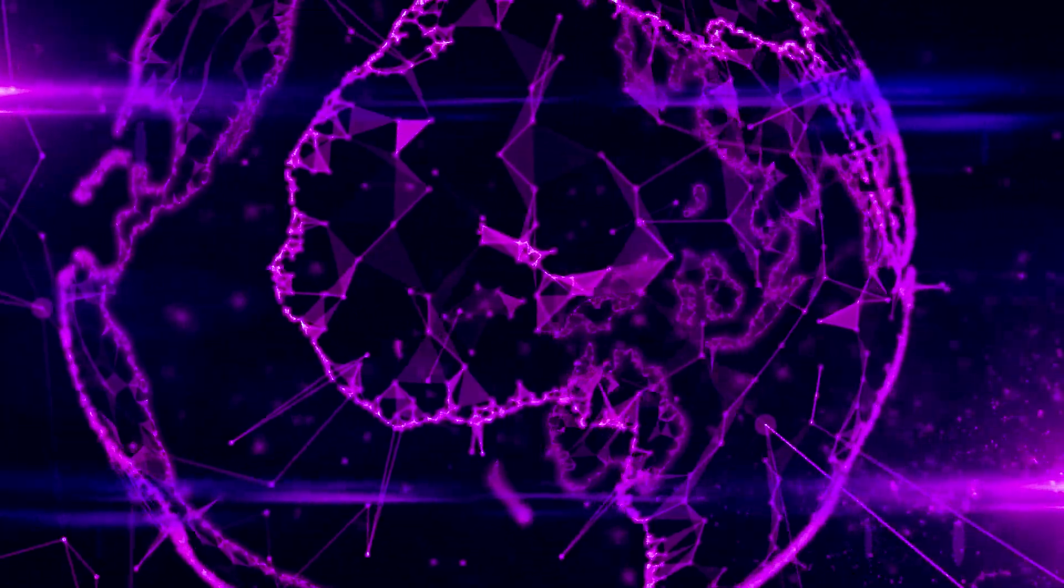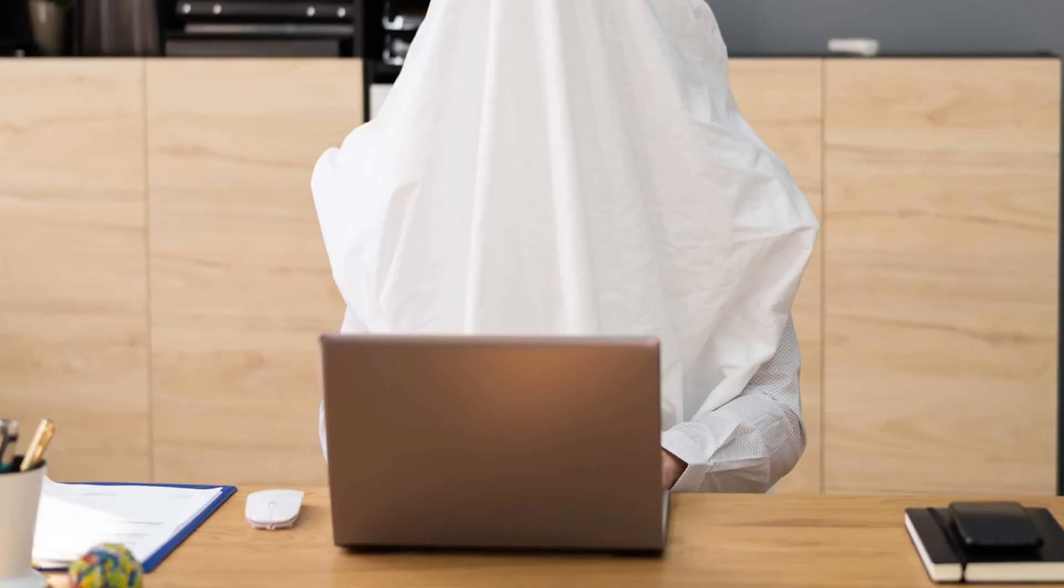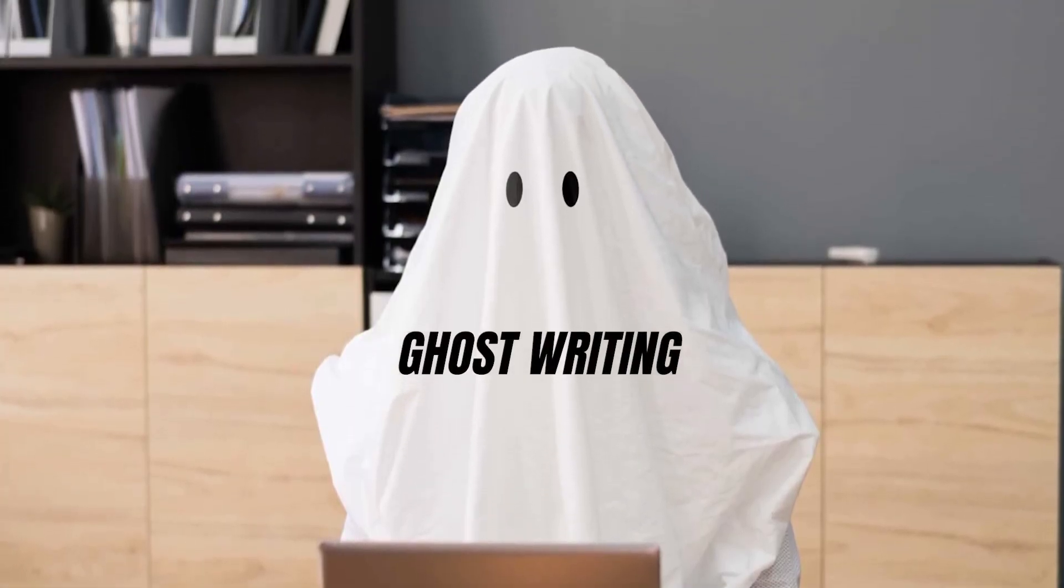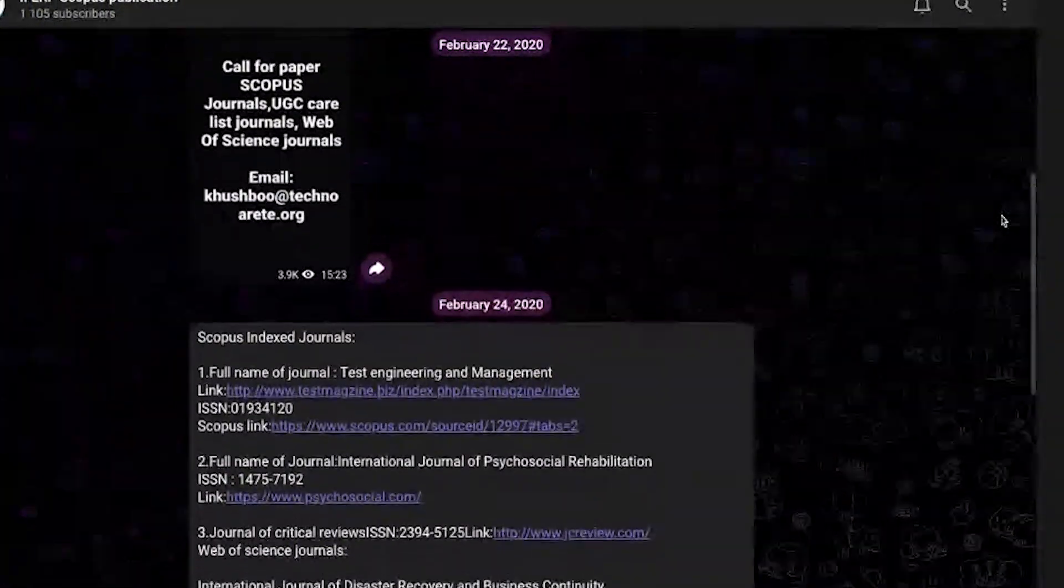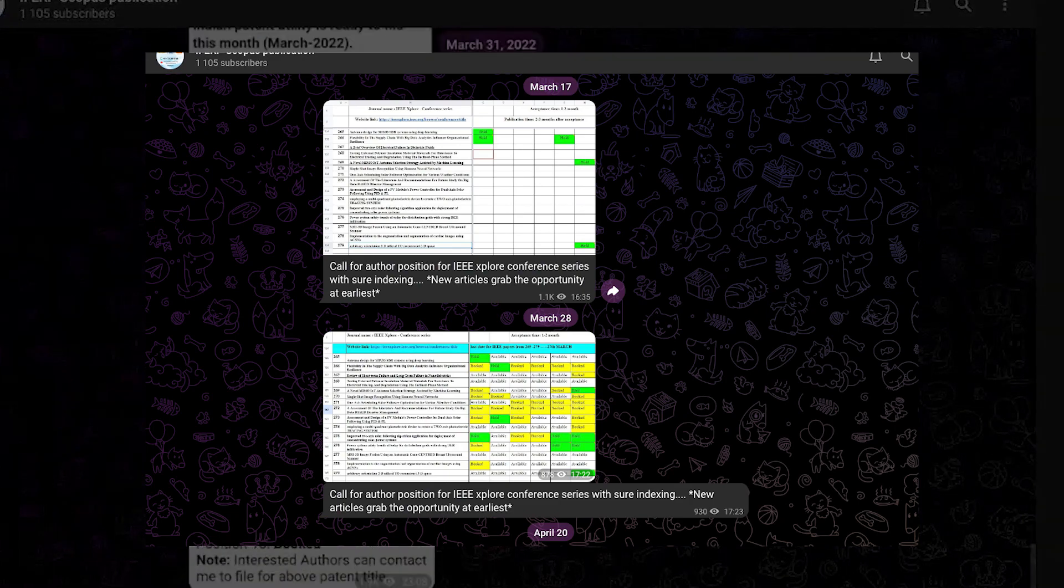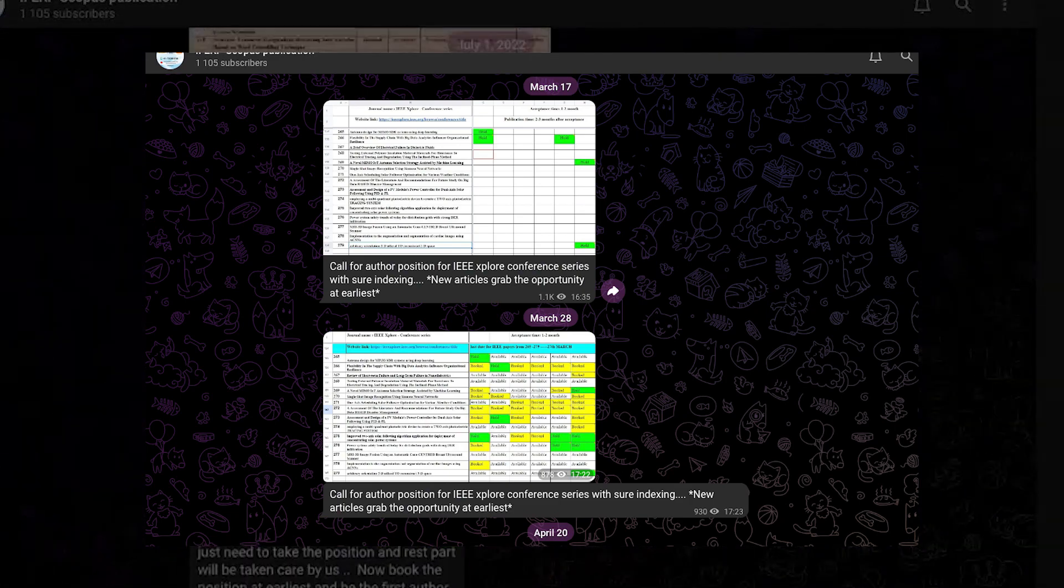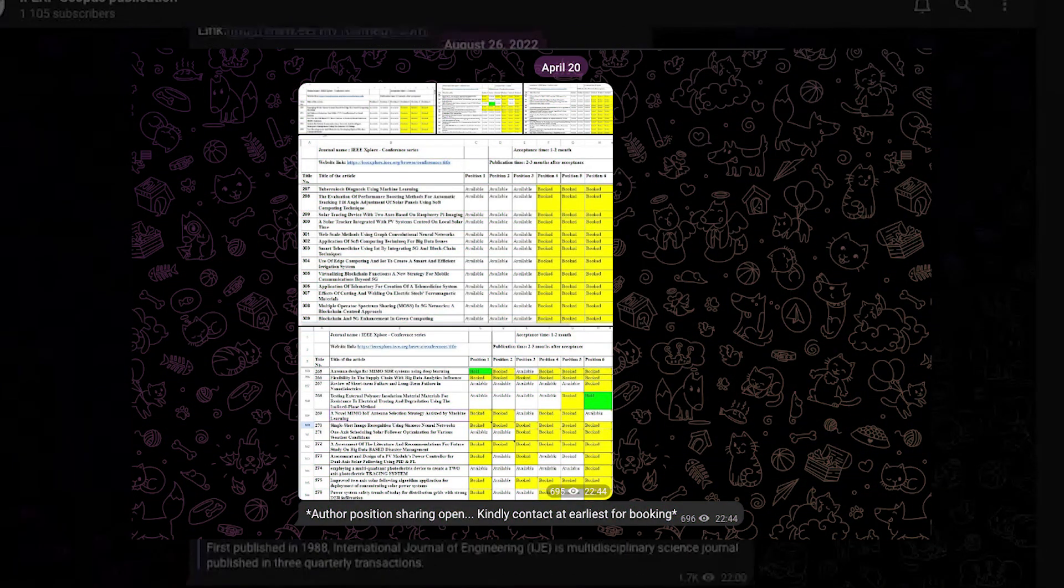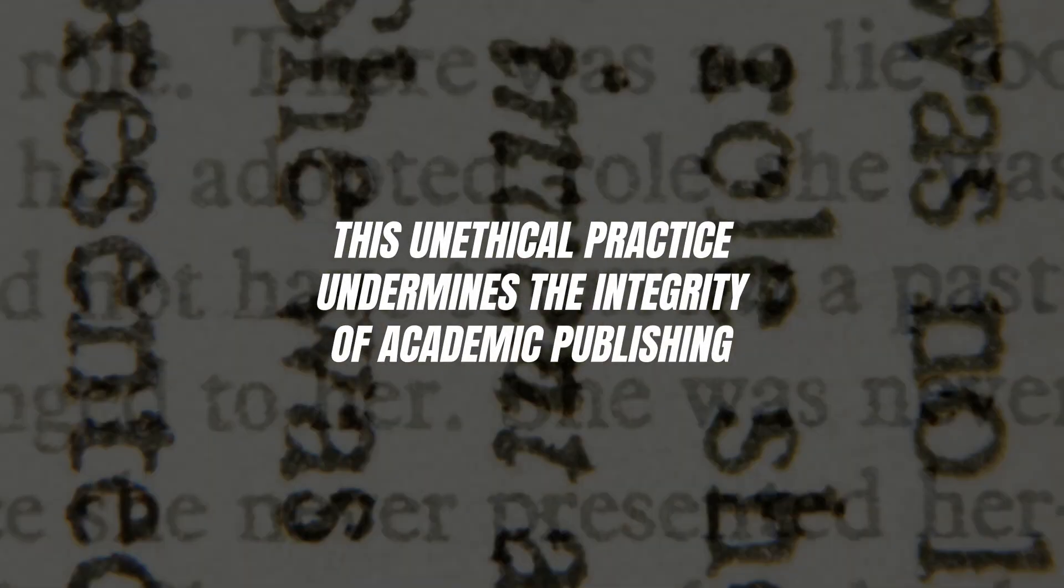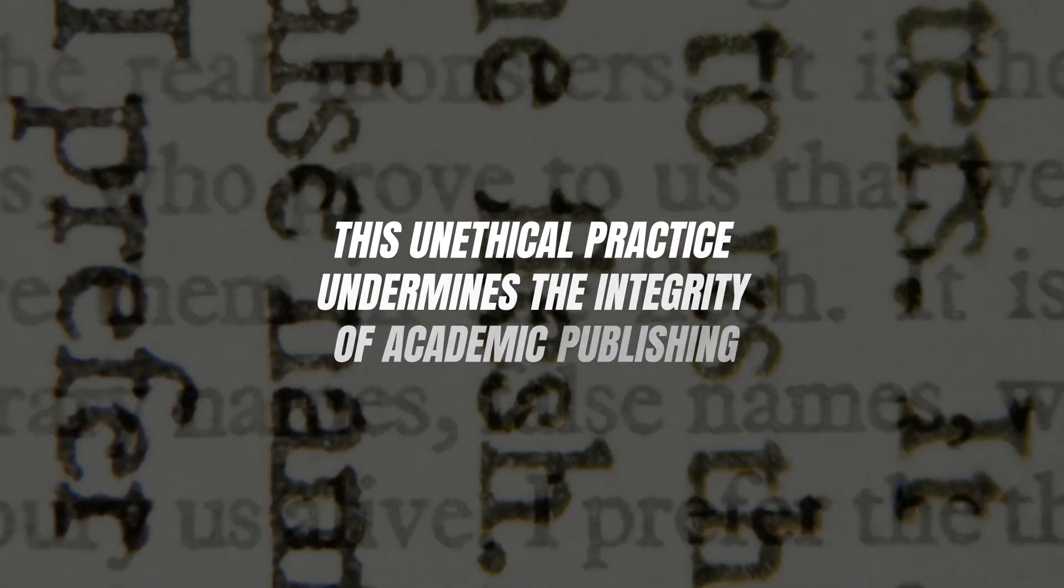However, the problem of predatory journals extends beyond publishing. Researchers must also be aware of ghost writing and illegitimate co-authorship. Networks on social media platforms sell co-author positions and offer ready-made papers or acceptance letters from reputable journals, allowing individuals to buy co-author positions. This unethical practice undermines the integrity of academic publishing.